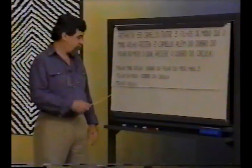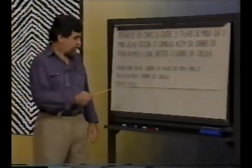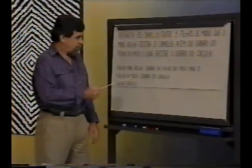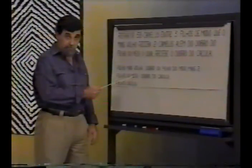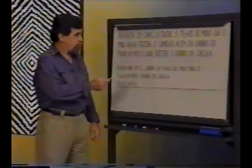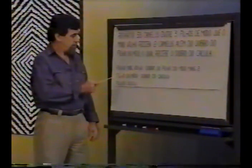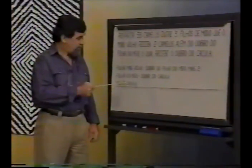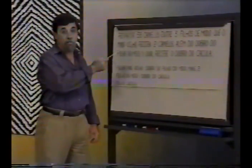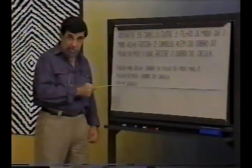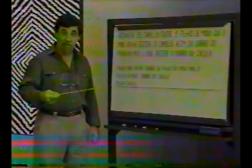Uma das maneiras de resolver esse problema é por tentativa. Suponhamos que o filho caçula recebesse 5 camelos. Se ele recebe 5, o do meio recebe 10. O mais velho vai receber o dobro do do meio — 20 — mais 2, que é 22. Conferindo: 22 mais 10 são 32, mais 5, dá 37. Não deu 58. Então o caçula vai receber mais do que 5. Eu quero lhe mostrar um outro método de resolver esse problema, desenvolvido pelos árabes e apresentado por al-Khwarizmi naquele livro que ele escreveu.